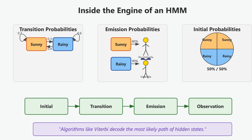Emission probabilities: these define how likely we are to see a certain observation from a state. For instance, if it's rainy, there might be a 90% chance someone carries an umbrella.